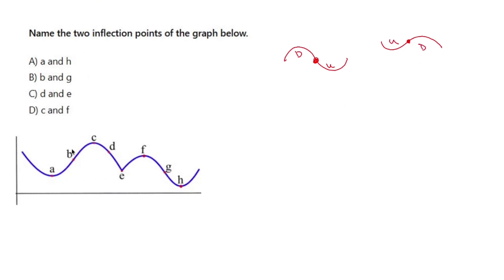So if I look at this without even looking at my options, we're concave up and then all of a sudden at B it switches to concave down.